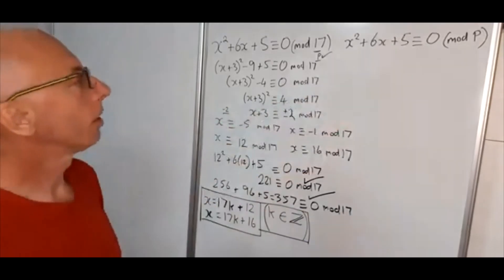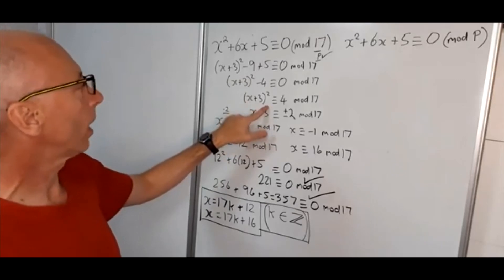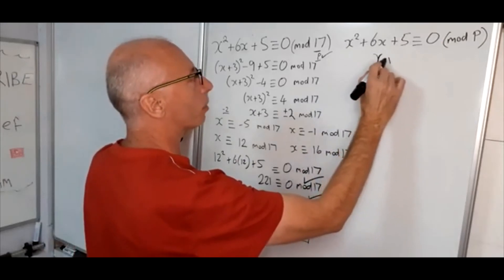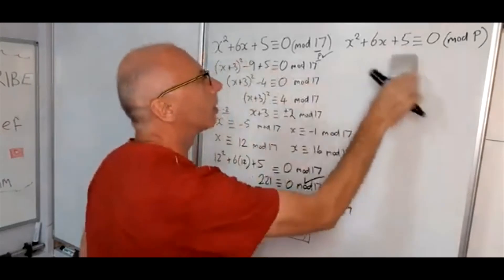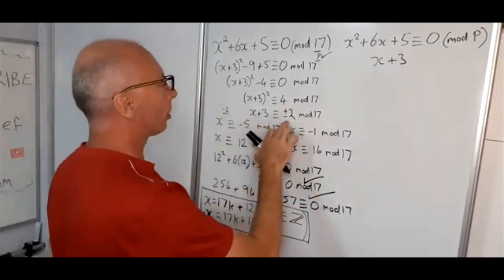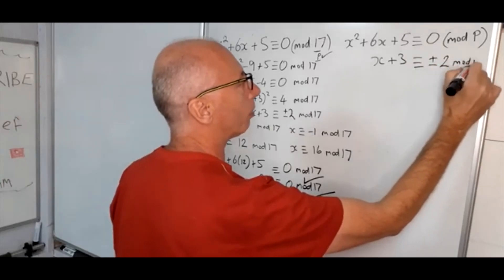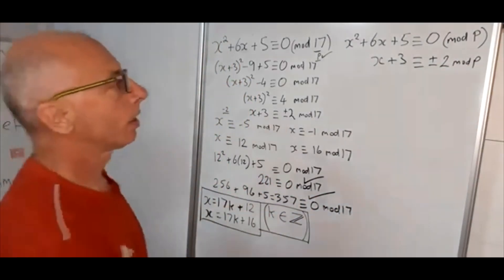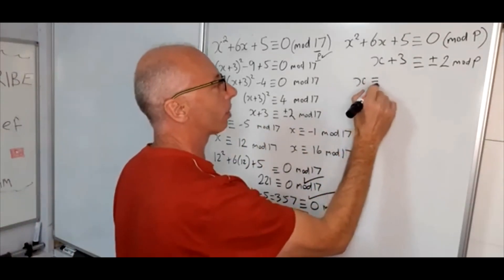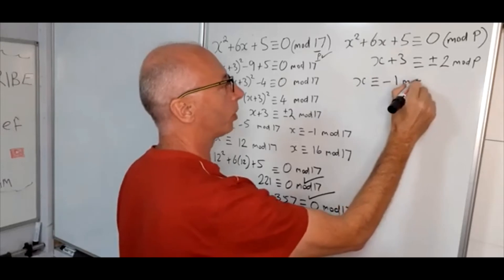So now let's have a look at the solution here. Now we can skip all this working out and go straight into taking the square. Let's go down to that stage first. So we've got x plus 3 is congruent to square root of plus or minus 2 mod p. So now what we do is, again as we went before, the two solutions. So we've got x is congruent, so let's take the plus 2. So plus 2 minus 3 is minus 1 mod p.